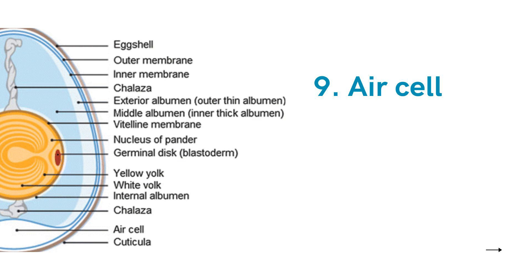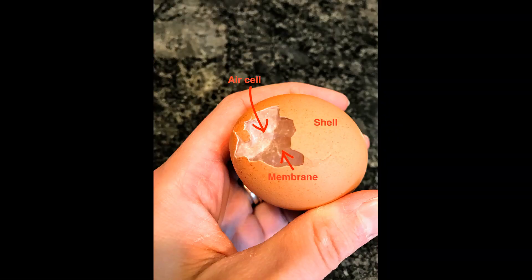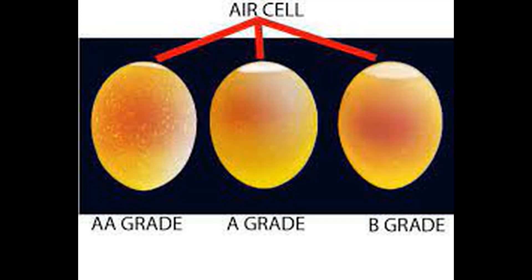When the egg leaves the hen, it has a temperature of 39 degrees Celsius. When it is cooled, there is a contraction of the contents, and air can penetrate through the shell. In the heavy end of the egg, the outer and the inner shell membrane are split, and the air cell is formed here. The older an egg is, the larger the air cell, as water continuously evaporates from the egg during storage. The air cell usually rests between the outer and inner membranes at the egg's larger end. As the egg ages, moisture and carbon dioxide leave through the pores of the shell, air enters to replace them, and the air cell becomes larger.